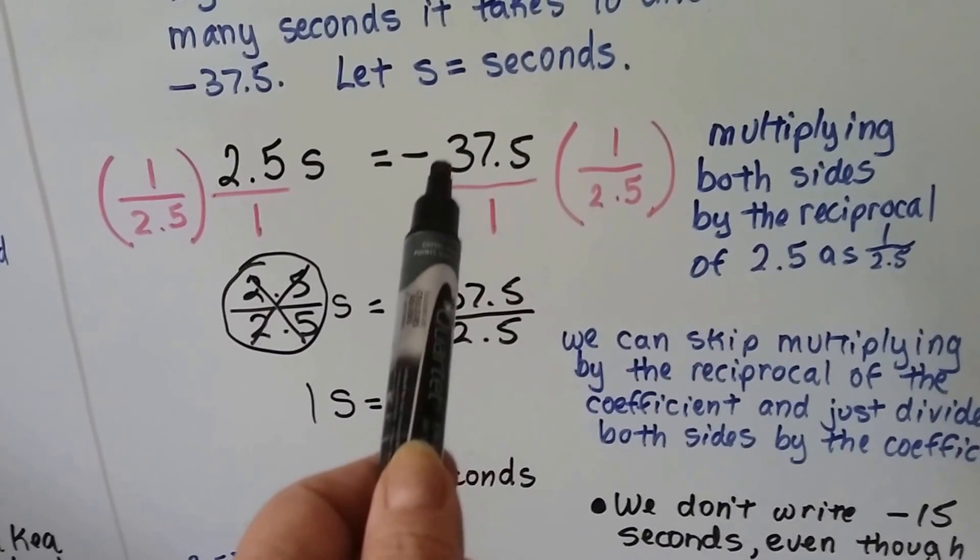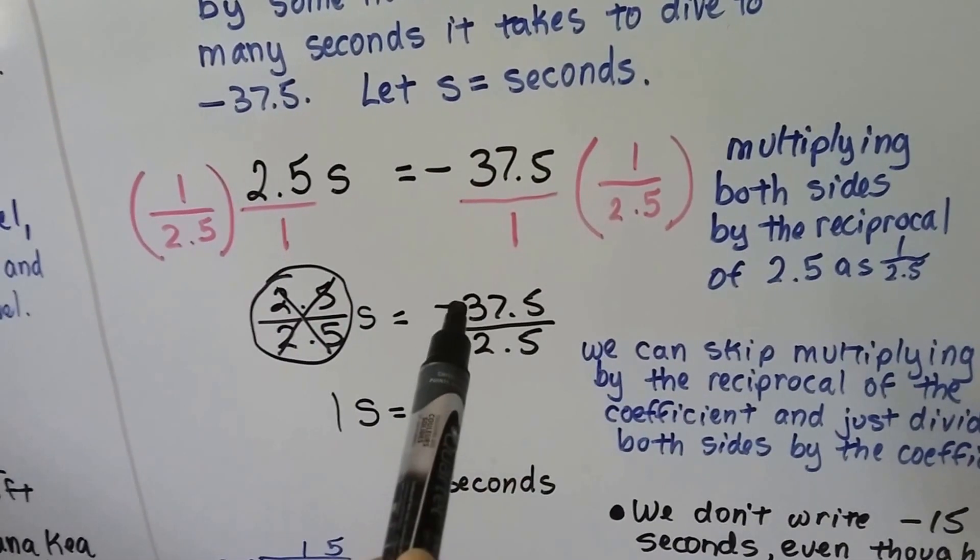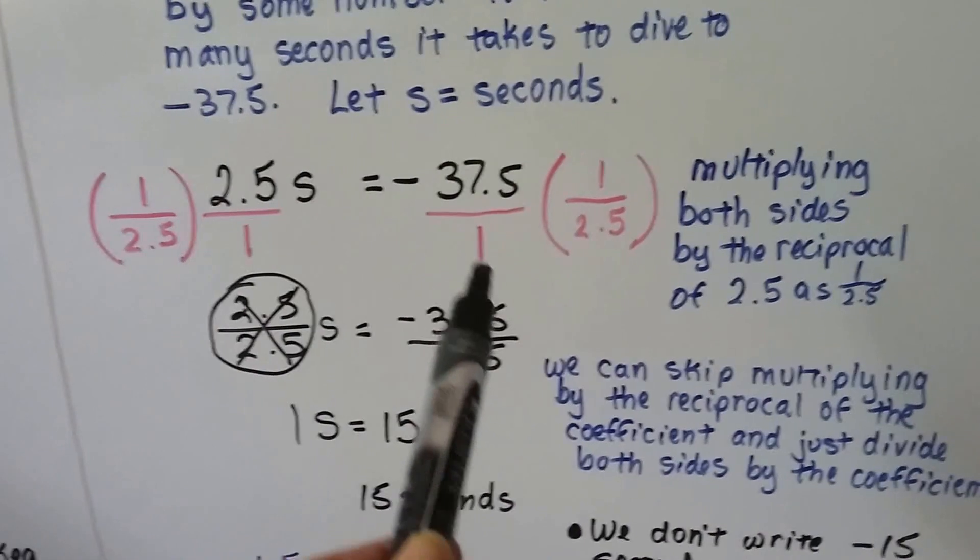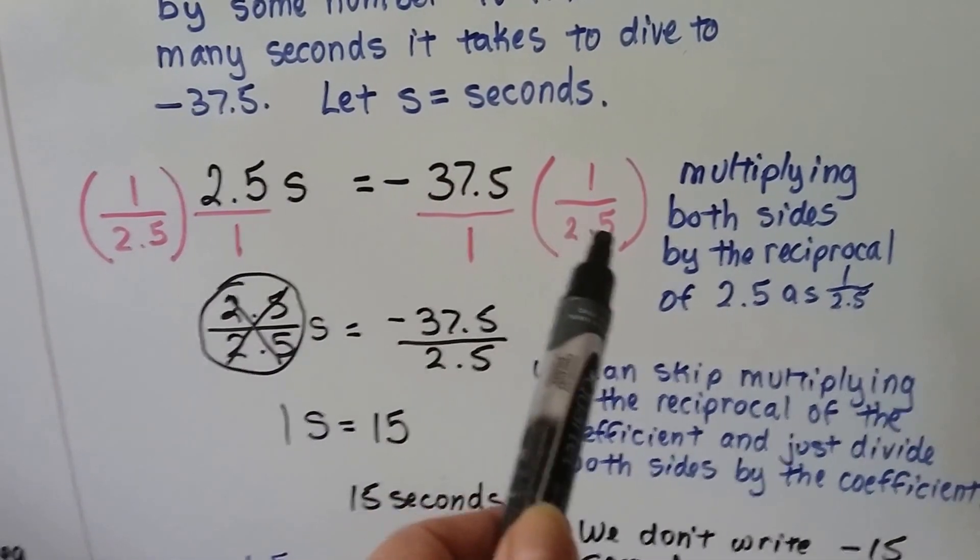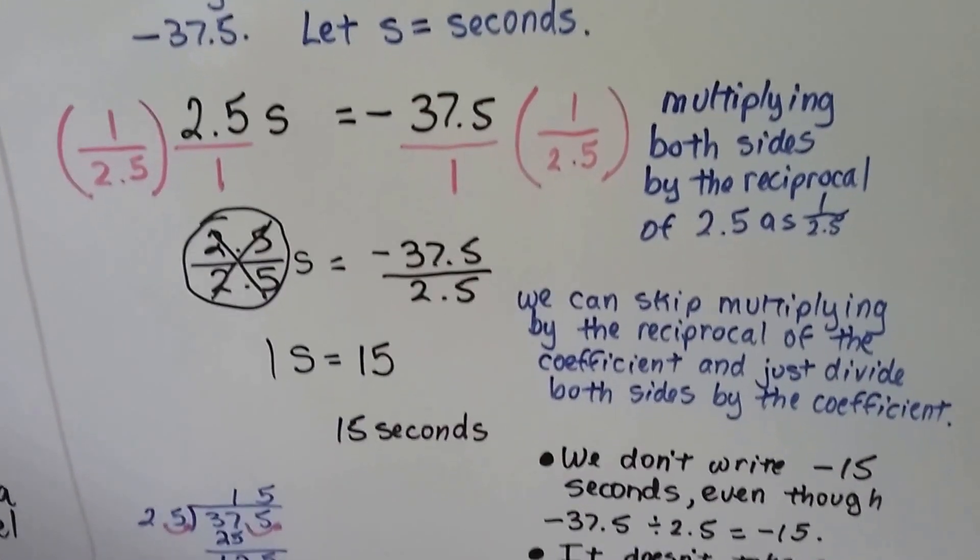On this side, we've got a negative 37.5 times 1, which gives us a negative 37.5. And on this side, we have 1 times 2.5, so we have 2.5.